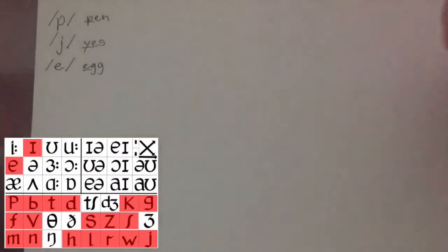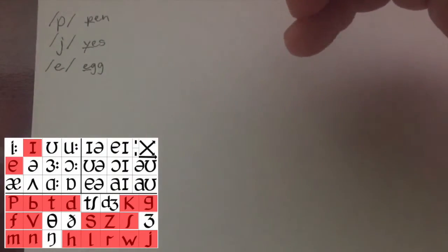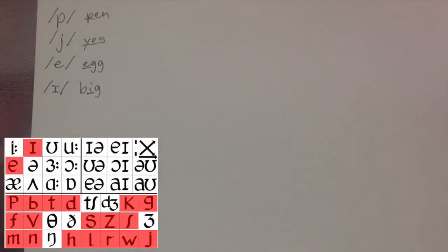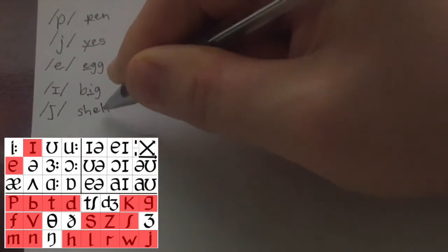So we're working with this one today, this one, and two more. Ih as in big. Big, this sound. Now that looks like a capital I but it's meant to be much smaller. And the final one is sh. Sh as in shell.